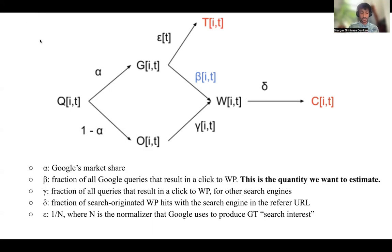We can see over here, quickly walk you through it. Q is basically the total search for a topic i at a time t. Alpha is Google's market share. The rest, O, is the other search engines. And what we can identify is the red one.